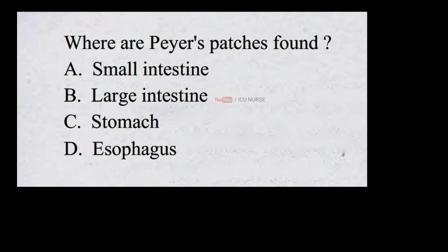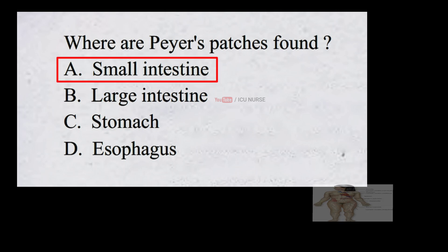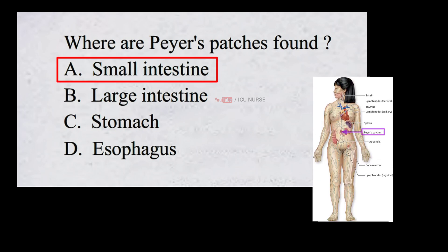Where are Peyer's patches found? A. Small intestine B. Large intestine C. Stomach D. Esophagus. The correct answer is A. Small intestine. Peyer's patches are found in the small intestine.